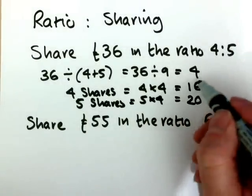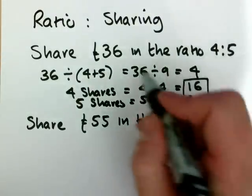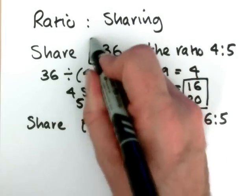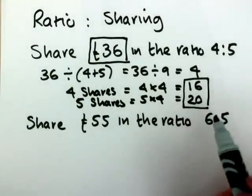If you check that the 16 and 20 come to 36, you'll see they do, and that suggests the answer is right. And that's your method.